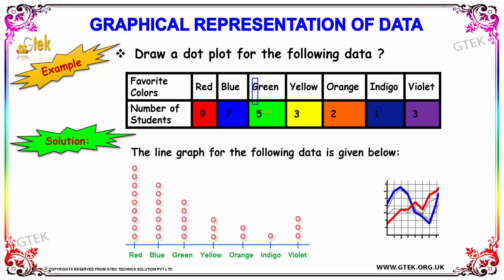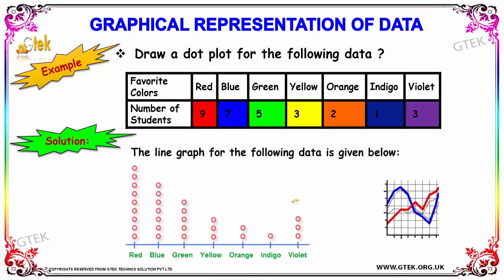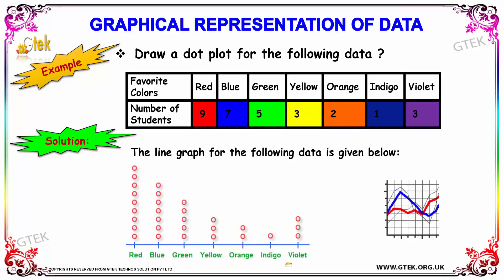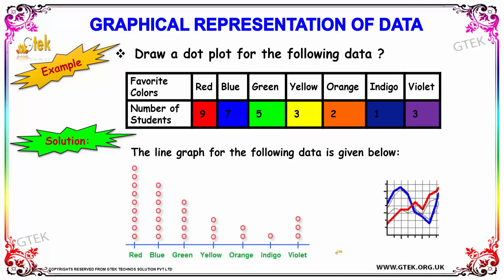For green it's 5, so we indicate the dot at 5. For yellow it's 3, and for orange it's 2. For indigo it's 1, and for violet it's 3. This is how we need to plot the dots — that is nothing but the line graph.